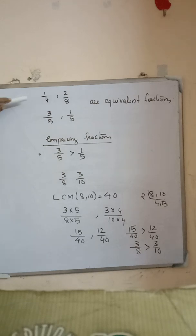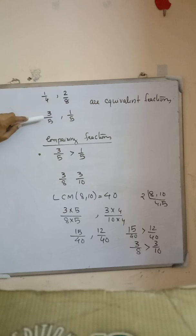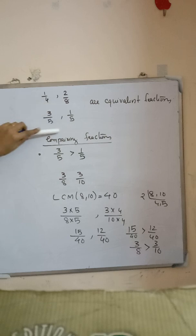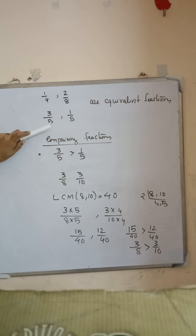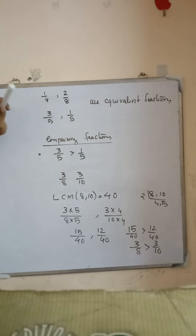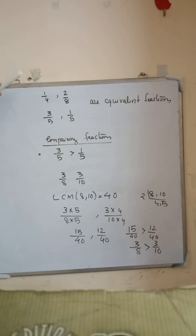Consider the fractions 1 by 4, 2 by 8, 3 by 5, and 1 by 5. The fractions 3 by 5 and 1 by 5 are equivalent fractions because their denominators are the same. Also, 1 by 4 and 2 by 8 are equivalent fractions because 2 by 8 simplifies to 1 by 4.